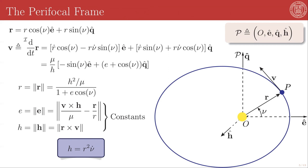So the coordinate origin of this frame does accelerate in space, but we've already taken care of that within our differential equations. And so when thinking of the two-body system, we can treat this parafocal p-frame as entirely inertial.